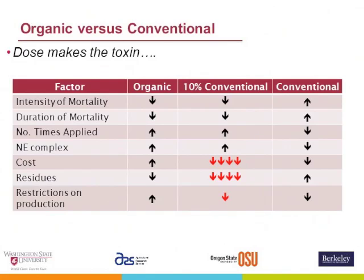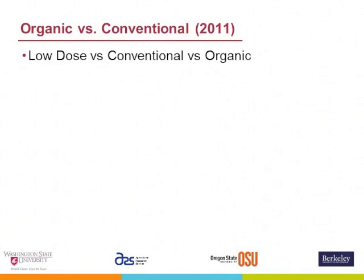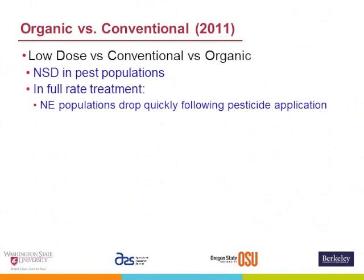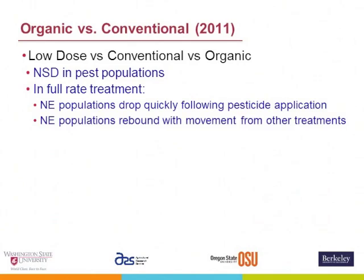We started this in 2011, and what we found was first there were no significant differences in any of the pest populations we looked at. In the full-rate treatment, we knocked natural enemy populations down immediately following pesticide applications for a two- to three-week period, and then all of a sudden they returned. What was happening is they were moving in from the other treatments, which weren't experiencing that high-and-low cycle. It essentially shows how you can do spot treatments and get movement of natural enemies back, even using a relatively harsh material.